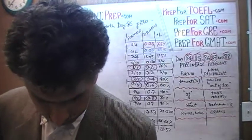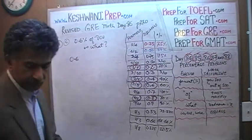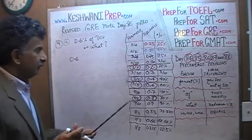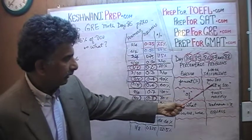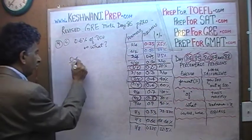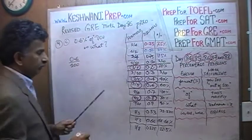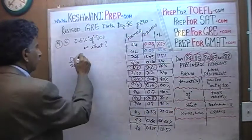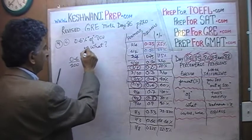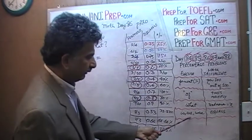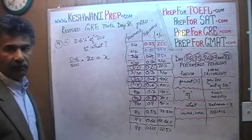Let's translate it one word at a time using our dictionary. 0.6% means per 100, so 0.6 out of 100, which is 0.6 over 100. 'Of' means multiply, so we multiply by 800. 'Is' means equals, and 'what' is your unknown X. That's it — you're done. It's very simple.